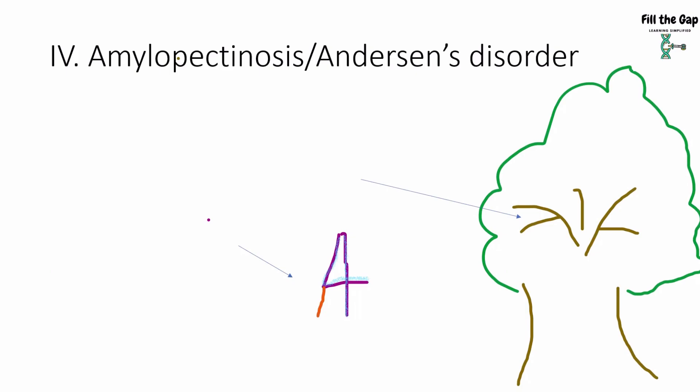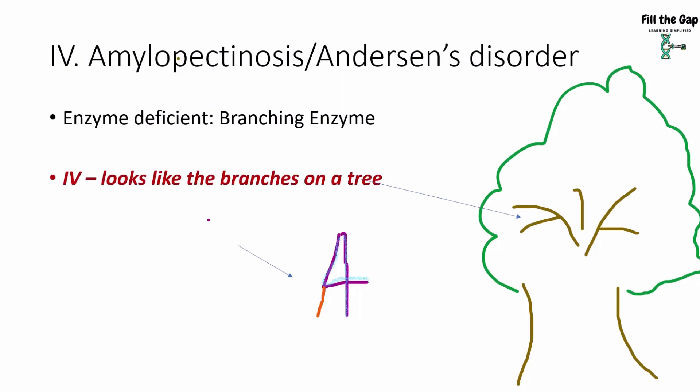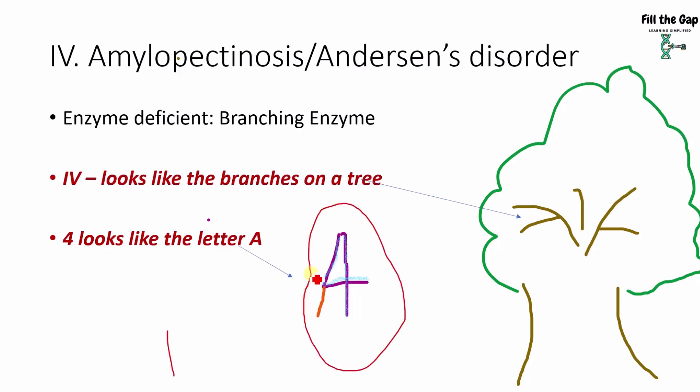Next is the fourth one, amylopectinosis, also called Andersen's disease. The enzyme deficient is the branching enzyme — the previous one was debranching, this one is branching. The Roman numeral IV looks like branches on a tree, helping you remember it's the fourth disorder. Also, the number 4 is hidden inside the letter A — and A is important because amylopectinosis starts with A — so this is the fourth disorder.